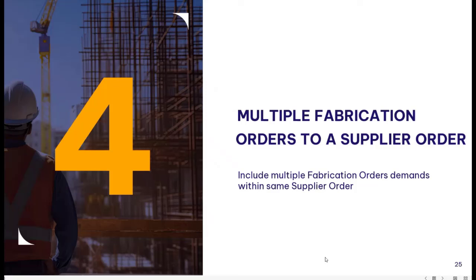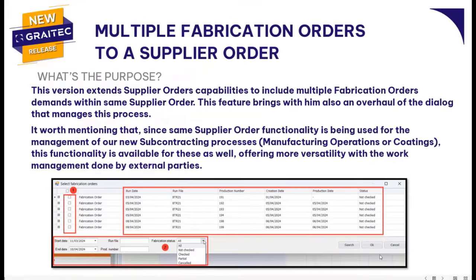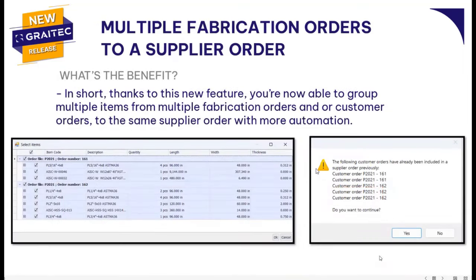Next, we'll take a look at grouping multiple fabrication orders to a single supplier order. The purpose of this feature is to enable Advanced Workshop Steel users to not only group one fabrication order at a time to a supplier order — now, once nesting has been done on multiple fabrication orders, you can choose to separate your supplier orders per project, or compile multiple nests from different fabrication orders into one single supplier order. The benefit is to save time and not bombard your suppliers with many different supplier orders.